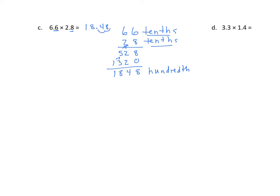We're going to do this in fraction form as well. We have 66 tenths times 28 tenths, and that equals 66 times 28 over 10 times 10. The product of 66 and 28 is 1,848, and 10 times 10 is 100, and we end up with 18 and 48 hundredths.